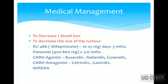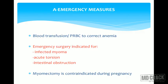Medical management options include RU486 (mifepristone), danazole, GnRH agonists like buserelin and nafarelin, GnRH antagonists like cetrorelix and ganirelix, or even Mirena. Emergency measures: if the patient has severe anemia, blood transfusions may be needed. Emergency surgery is indicated only if the myoma is infected, there is acute torsion, or there is intestinal obstruction.